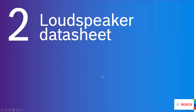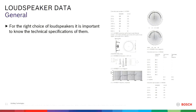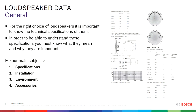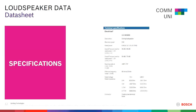Then, loudspeaker datasheet. In order to be able to select the right loudspeaker, you have to know what the loudspeaker can do. You have to know the technical specifications, and they're all written down in the datasheet. It's important to know what it says when you read it. I've broken the datasheet down into four main subjects: specifications, installation, the total environment, and accessories. Now we're going to start with specifications.